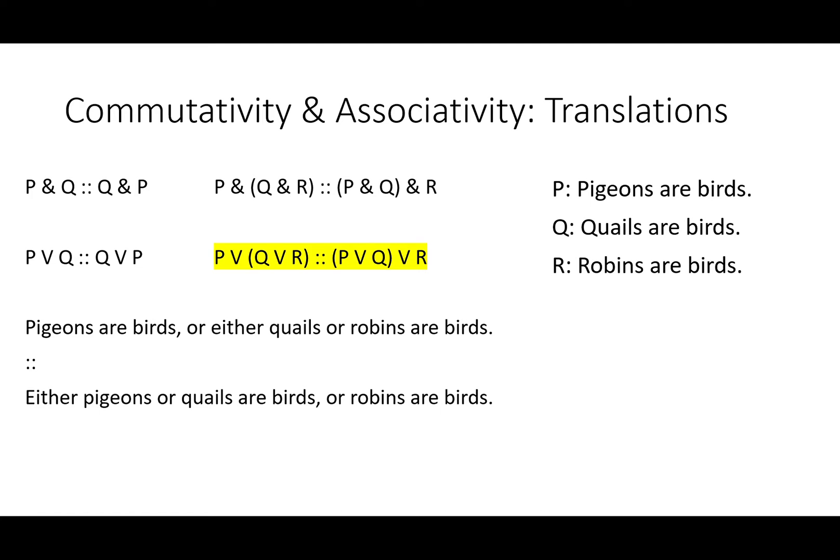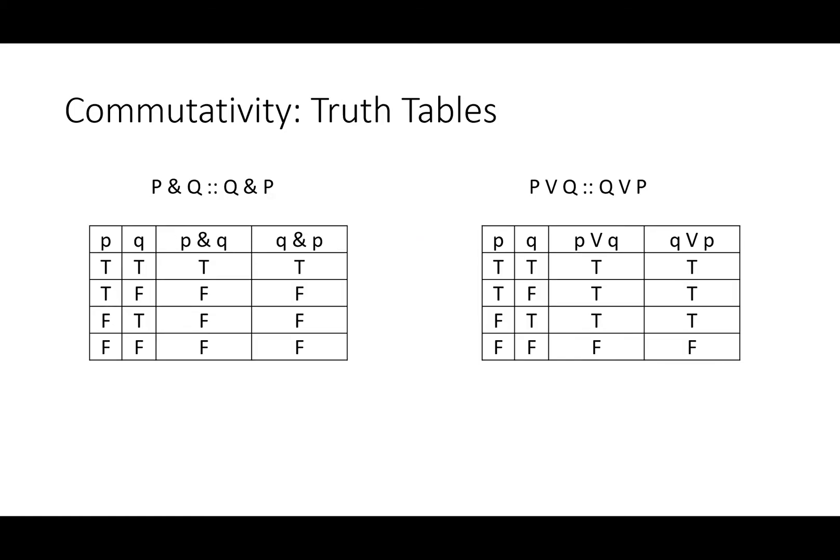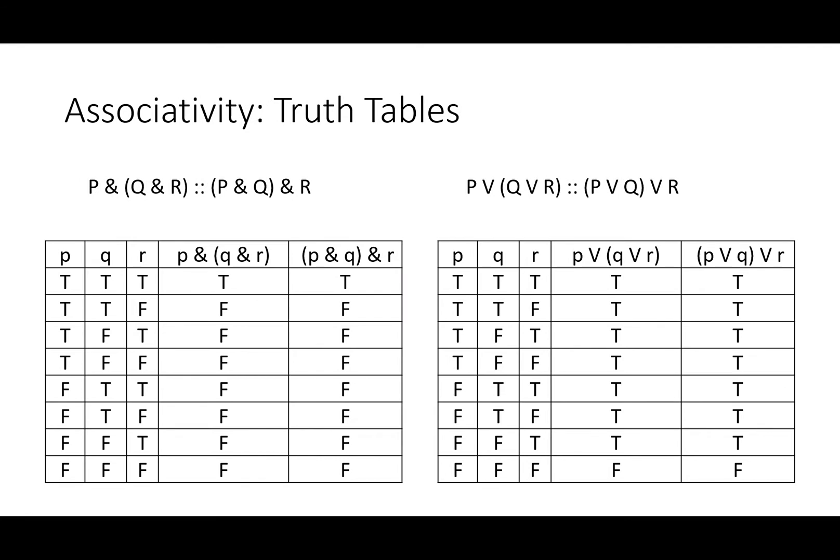These rules are ones that definitely don't give you any surprises with translations. The truth tables are just as unsurprising. Q and P and P and Q have the exact same truth table as do P OR Q and Q OR P. And in associativity, the truth tables are longer but no less equivalent and no more surprising.